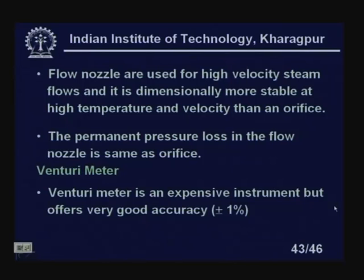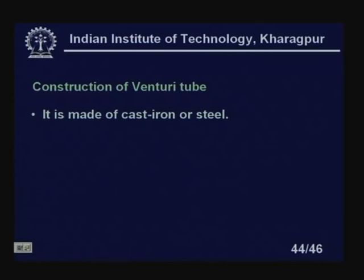The venturi meter is an expensive instrument but offers very good accuracy — plus or minus 1 percent. It has the lowest permanent pressure loss. Looking at its construction: it is made of cast iron or steel, and large venturi tubes can be made of concrete. The throat portion of the venturi is sometimes made of bronze for easy replaceability. The venturi has an upstream section and a converging section down to the throat, where a tap is placed.